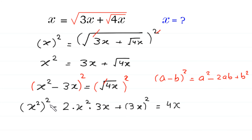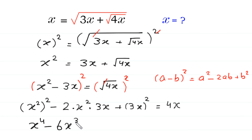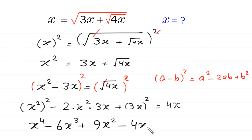Next, square of x squared is x to the power 4, minus 2 times x squared times 3x, plus square of 3x is 9x squared. We move this 4x to the left side: x to the power 4 minus 6x cubed plus 9x squared minus 4x is equal to 0.